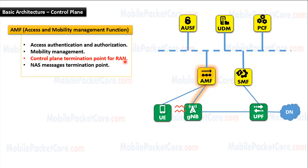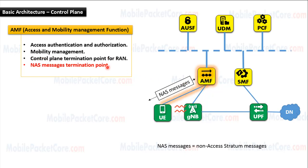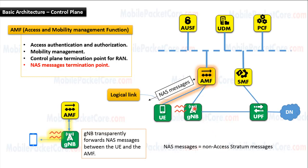Control plane termination point means that the AMF is the first point in the control plane that the gNodeB connects to. NAS messages termination point means that the messages between the UE and the AMF are named NAS messages, which refers to Non-Access Stratum messages. This link between the AMF and the UE is a logical link.